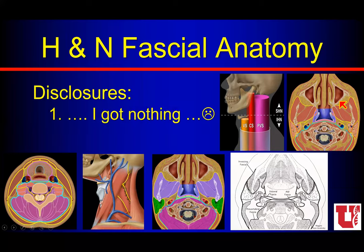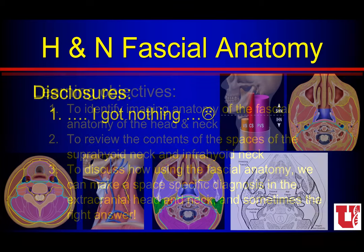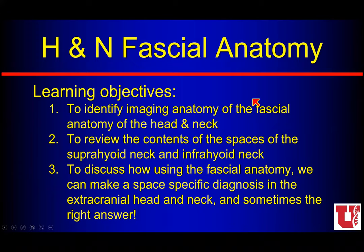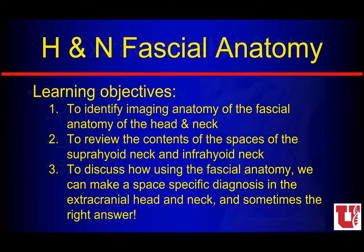I have nothing significant to disclose. Our objectives: we're going to talk about the fascial anatomy of the head and neck, and we're going to see how this fascia divides the extracranial head and neck into spaces, and we can think about what normal anatomy lives in each of those spaces and see how we can make a space-specific differential diagnosis based on this anatomy and those fascial layers.